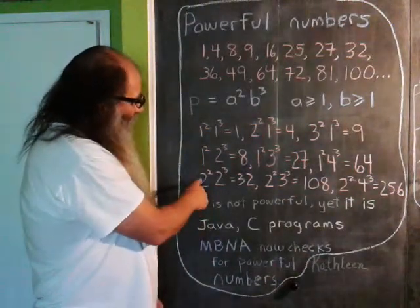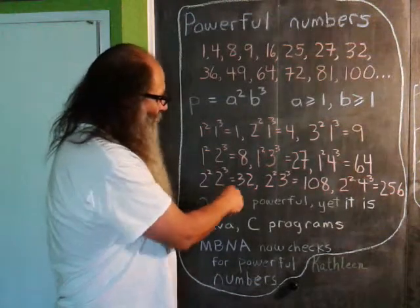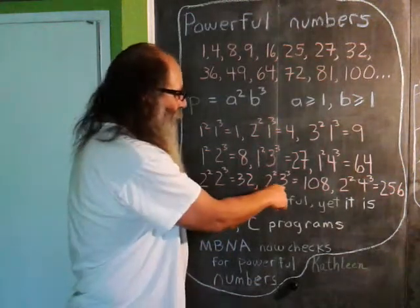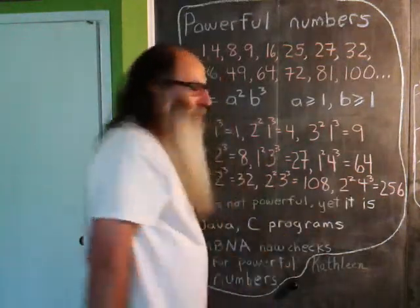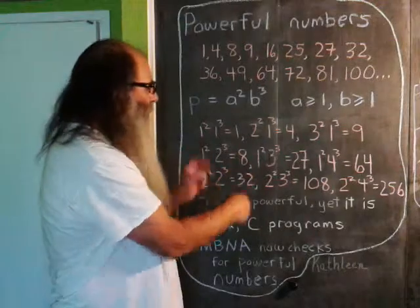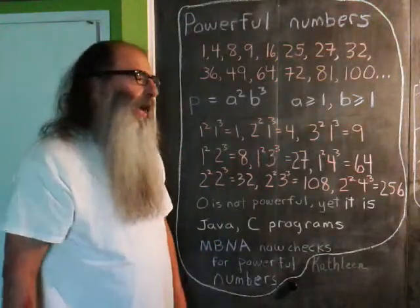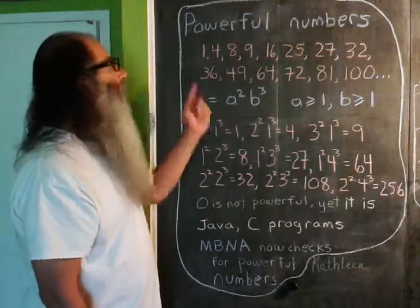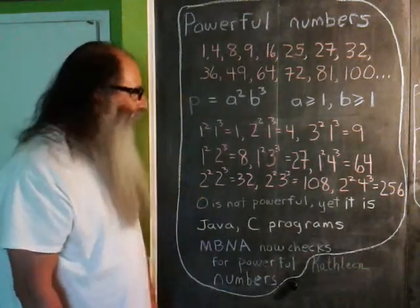Now we'll go ahead and increment a to 2. 2 squared plus b equals 2 here gives us 32, a2 b3 gives us 108, a2 b4 gives us 256, and so on. This lent itself to a very simple brute force algorithm for generating the sequence of powerful numbers.